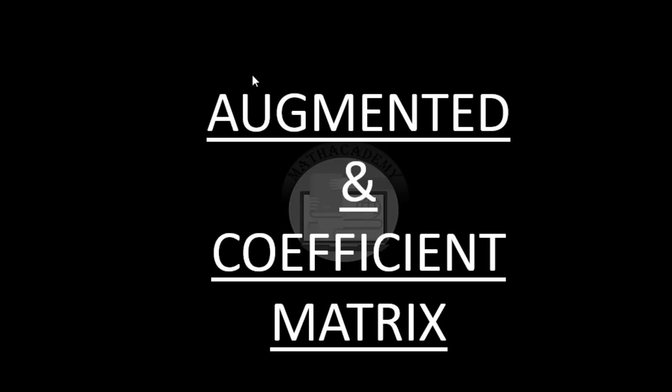Hi! In the previous video, I covered what we mean by matrices and the different types of matrices: row matrix, column matrix, and square matrix, and how to find the order of a matrix. In this video, we will see how to form an augmented matrix and a coefficient matrix from a given system of linear equations. Let us begin with the augmented matrix.